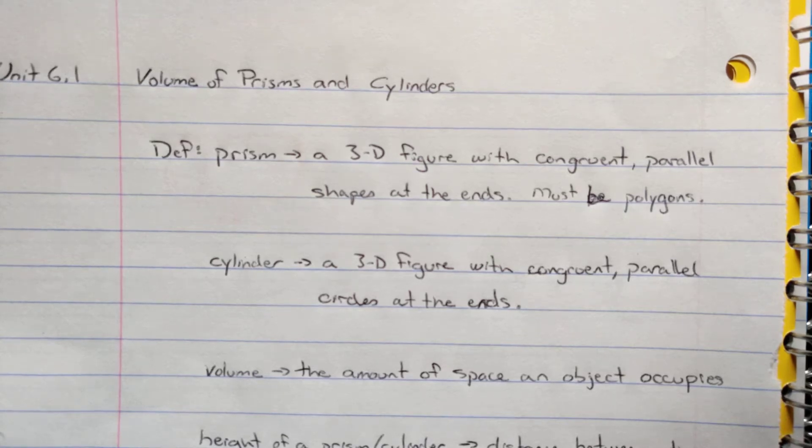In this section, we're going to look at the volume of prisms and cylinders. So to define these, a prism is a 3D figure with congruent parallel shapes at either end, and they must be polygons.